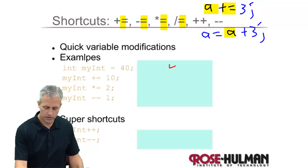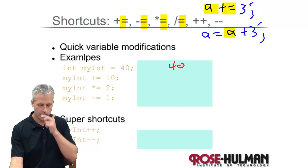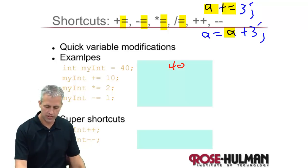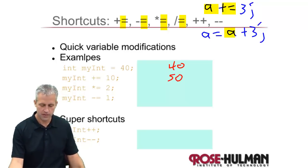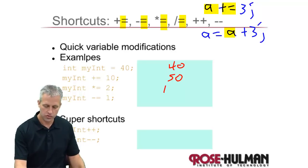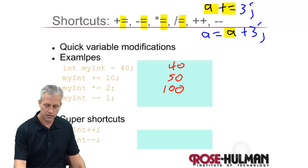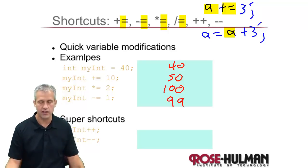Looking through this example: first we assign my_int to 40, then we say plus equals 10, so it's suddenly up to 50. Then times equals 2, so it's up to 100. Then minus equals 1, it's down to 99.